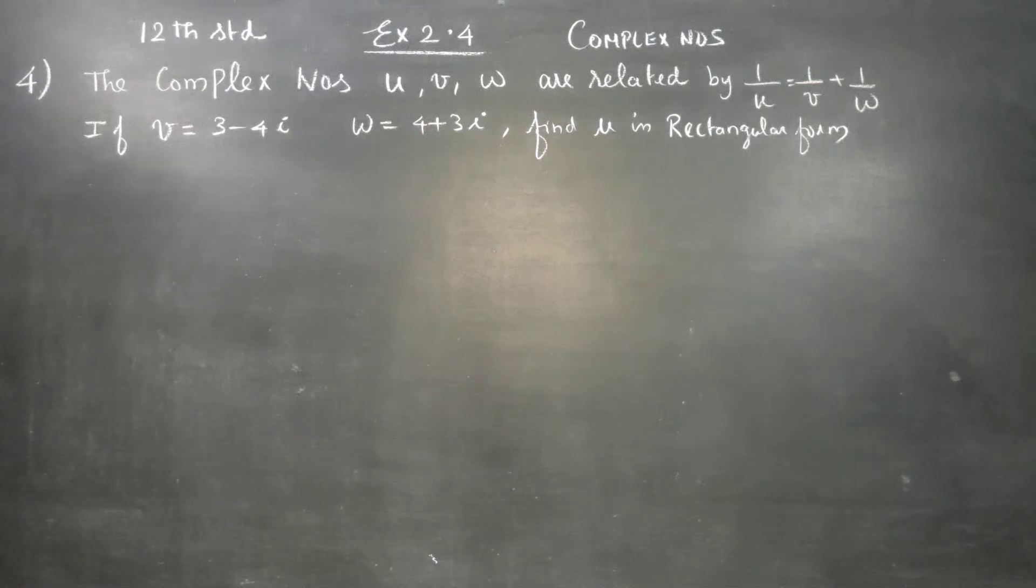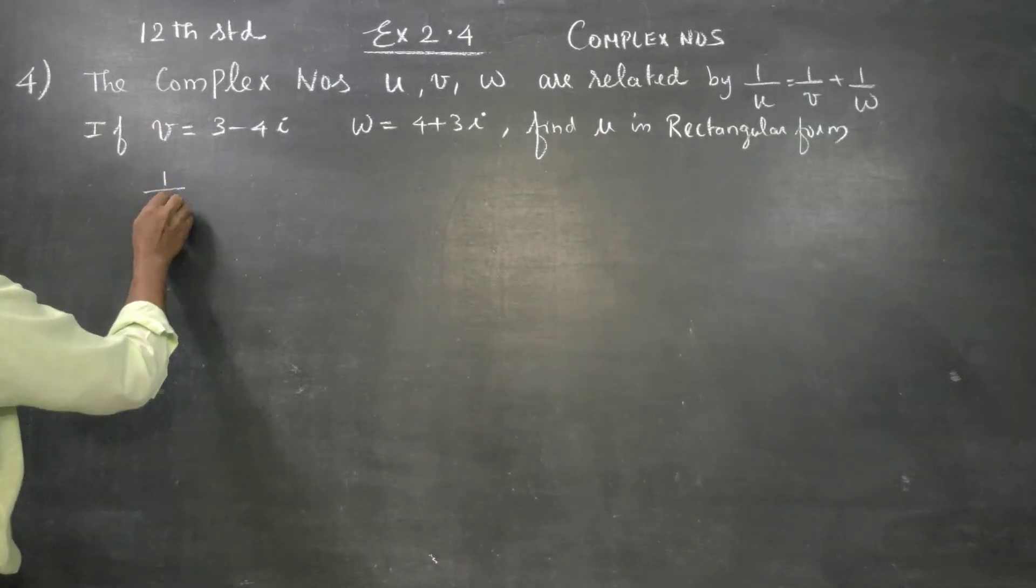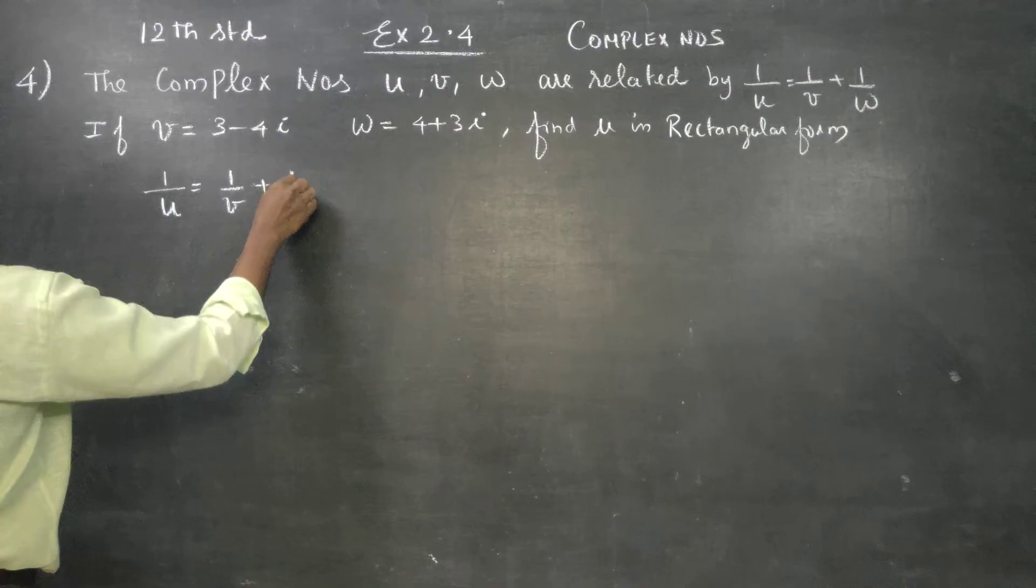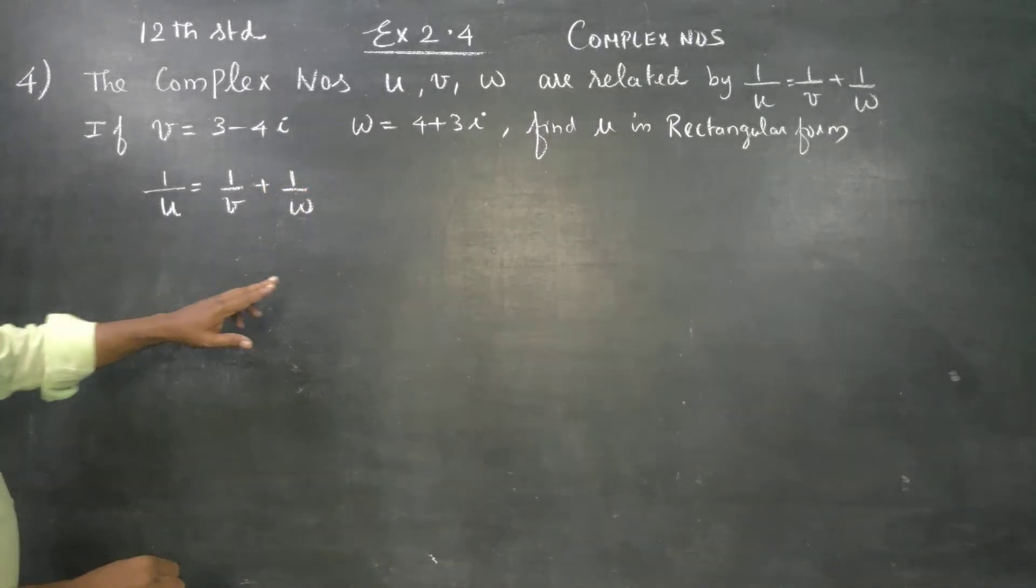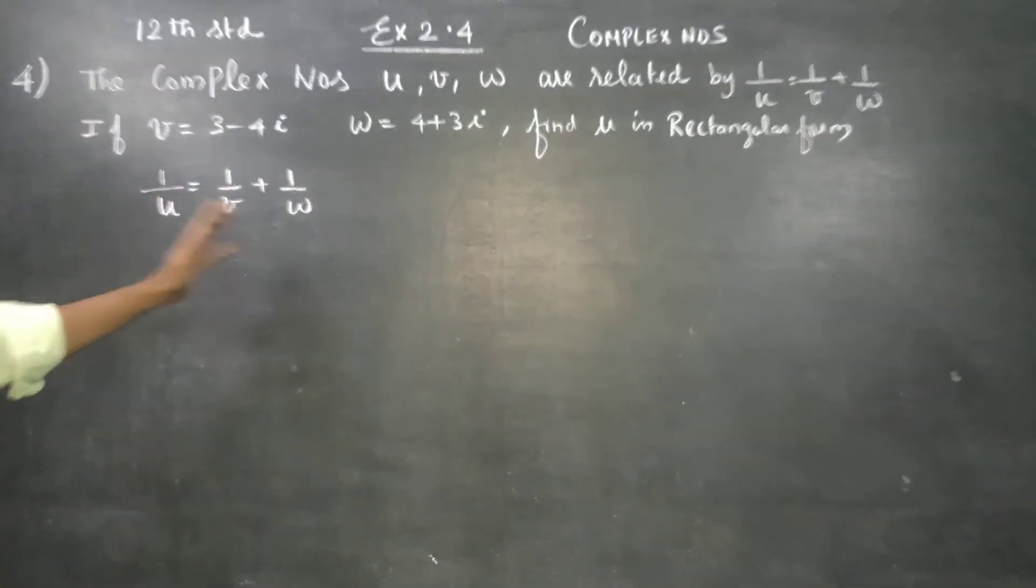Dear 12 standard students, in exercise number 2.4, I have to find 1/u = 1/v + 1/w and then find u in rectangular form. First of all, I will write this.